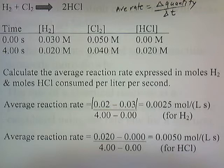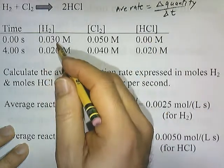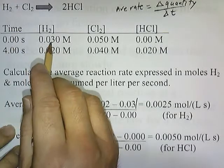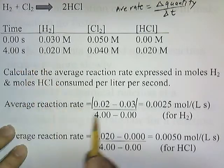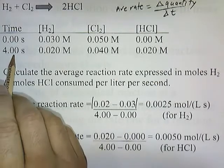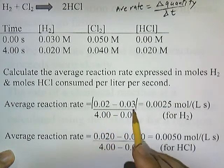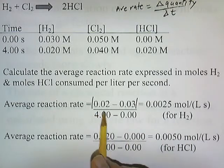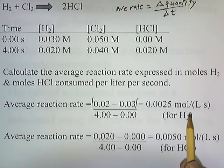As this chemical reaction goes on, we're measuring the amount of H₂, Cl₂, and HCl. We're going to first figure out the rate at which H₂ is consumed. At the end of 4 seconds, there's 0.02 molar of H₂, and at the start there's 0.03. So the change in the amount of H₂ is 0.02 minus 0.03, and the change in time is 4 minus 0. Solving this, 0.02 minus 0.03 divided by 4 gives 0.025 moles per liter per second. Since 0.02 minus 0.03 gives a negative number, we take the absolute value to keep our answer positive.